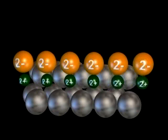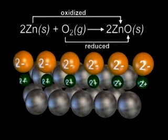More generally, oxidation corresponds to a loss of electrons. Zinc is oxidized because it loses electrons to the oxygen. On the other hand, oxygen is said to be reduced because it gains electrons.